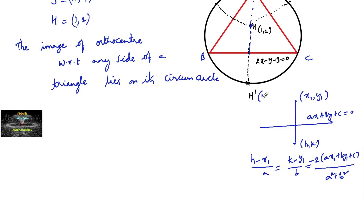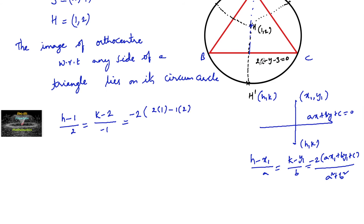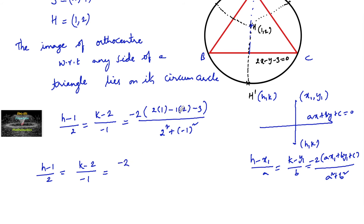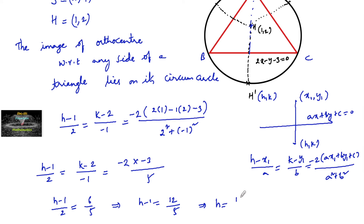Substituting x1 = 1, y1 = 2, a = 2, b = -1, c = -3: (h - 1)/2 = (k - 2)/(-1) = -2(2·1 + (-1)·2 + (-3)) / (4 + 1). The numerator becomes -2(2 - 2 - 3) = -2(-3) = 6, and denominator is 5, giving 6/5. So h - 1 = 12/5, which means h = 17/5.